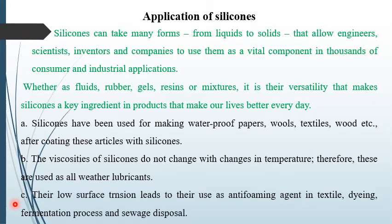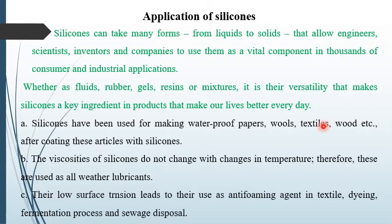It is their versatility that makes silicones a key ingredient in products that make our lives better every day. Silicones have been used for making waterproof paper, waterproof wool, textile, and wood, due to their water-repellent nature. After coating these articles with silicones, they can be used as waterproofing agents.